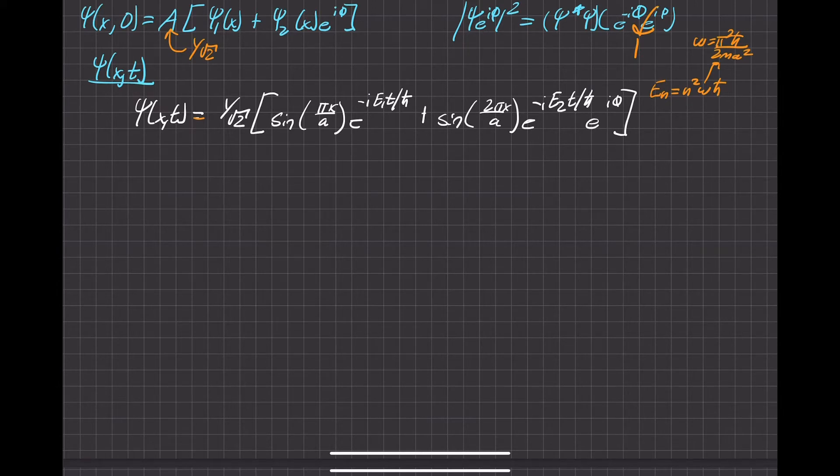And then also the general form of the wave function for an infinite square well. The spatial part is square root of 2 over a, where a is the width of the infinite square well, sine n pi x over a. And that's where we got all this. This 2 is actually a.